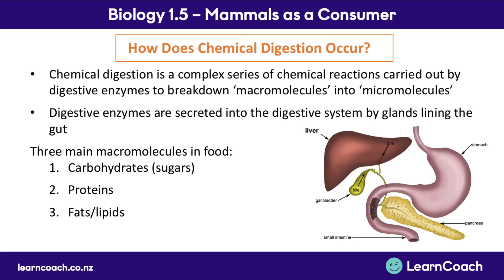The three main groups of food that need to be chemically digested are carbohydrates (sugars), proteins, and fats — also called lipids. The next section contains important information you need for your exam: you need to know how these reactions occur and be able to name the specific food molecules and enzymes involved.